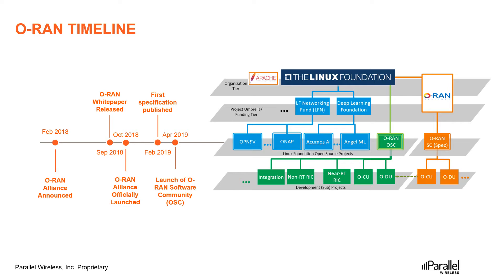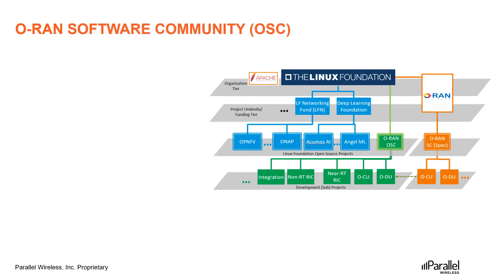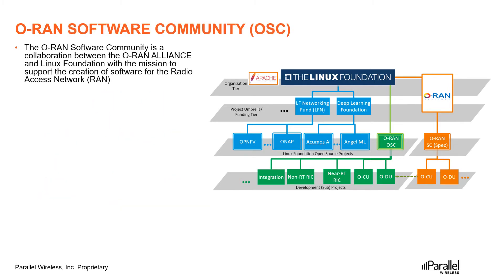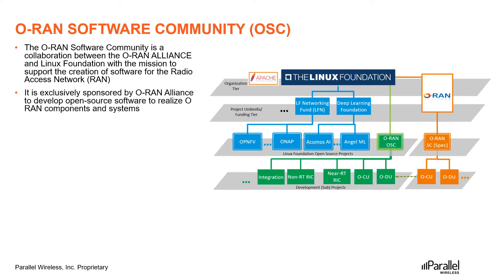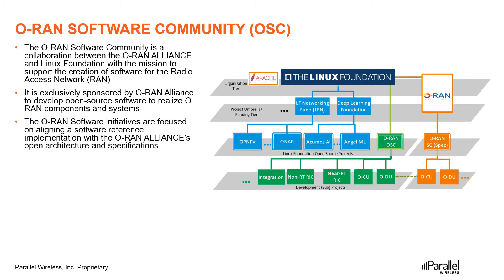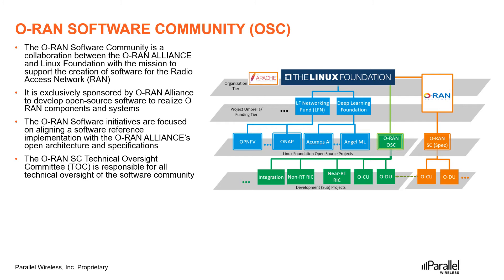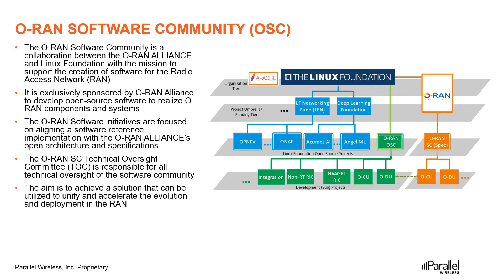The ORAN Software Community, or OSC, is a collaboration between the ORAN Alliance and Linux Foundation, with the mission to support the creation of software for the Radio Access Network or RAN. It is exclusively sponsored by ORAN Alliance to develop open source software to realize ORAN components and systems. The ORAN Software Initiatives are focused on aligning a software reference implementation with the ORAN Alliance's open architecture and specifications. The ORAN SC Technical Oversight Committee is responsible for all technical oversight of the software community, with the aim to unify and accelerate the evolution and deployment in the RAN.